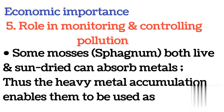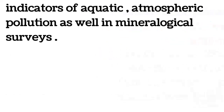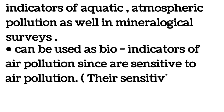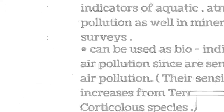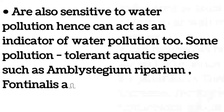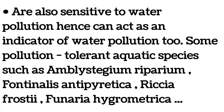Five: role in monitoring and controlling pollution. Some mosses and sphagnum, both alive and sun-dried, can absorb metals. Thus heavy metal accumulation enables them to be used as indicators of aquatic and atmospheric pollution. In mineralogical surveys they can be used as bio-indicators of air pollution, since they are sensitive to air pollution. Their sensitivity increases from terricolous to corticolous species.